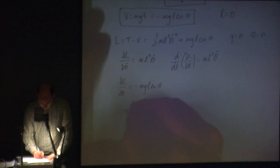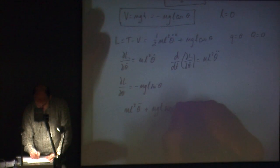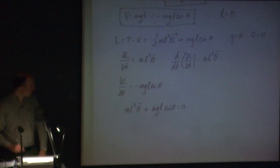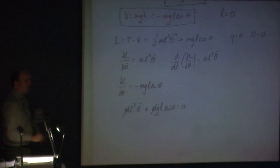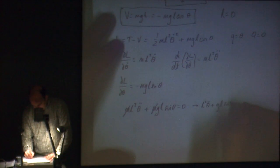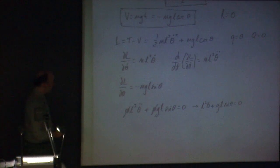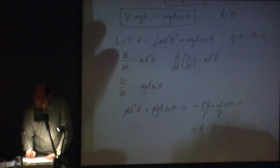Plugging into Lagrange's equation, I end up with ml² theta double dot plus mgl sine theta equals 0. My m's cancel — we expect that, since we're dealing with a pendulum and mass has nothing to do with its motion. So this gives l² theta double dot plus gl sine theta equals 0. I can divide both sides by l squared, giving theta double dot plus (g/l) sine theta equals 0. That is my equation of motion for the pendulum.